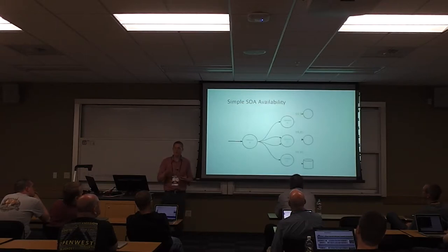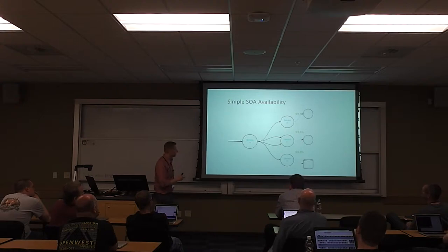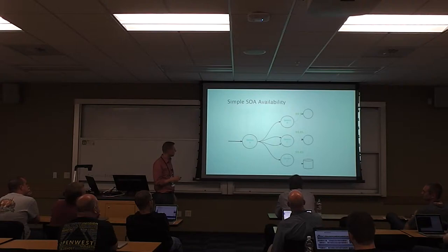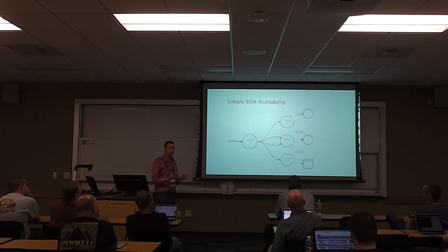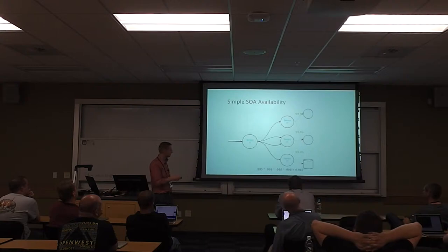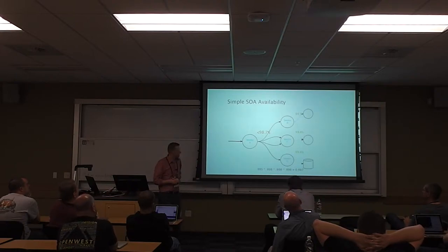What does this do to our availability? If every time one of our downstream dependencies has an error we fail, what does that mean for our overall availability? You can actually calculate it. If we make some simple assumptions — service B, C, and D are available at 99.5%, 99.8%, and 99.6% of the time — pretty good, not bad. Once in a while a database goes down, or there's a logic error in a service. And service A makes one request to B, two requests to C, and a fourth to service D. If we assume failures are independently distributed, the maximum availability of service A is about 98.7%.